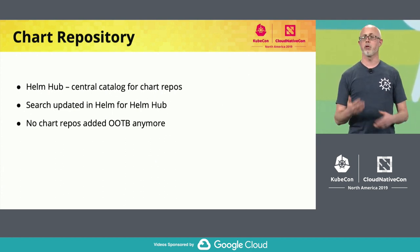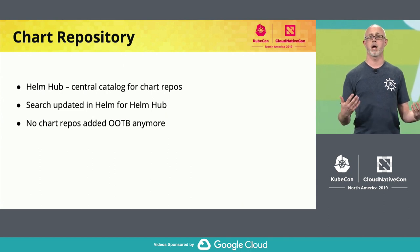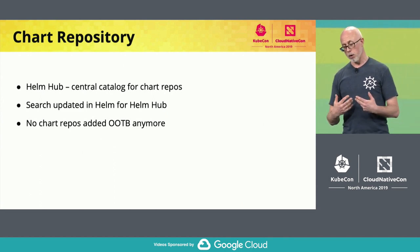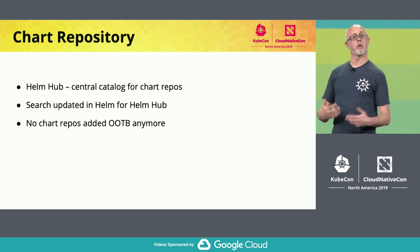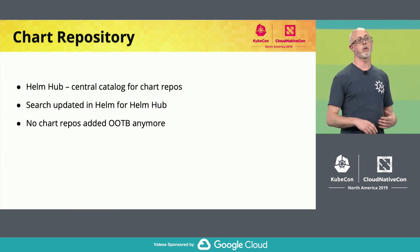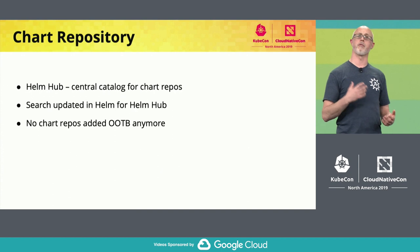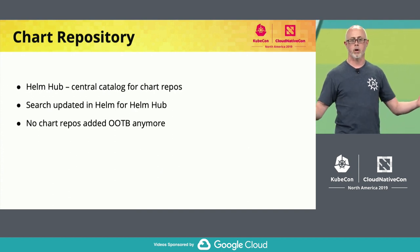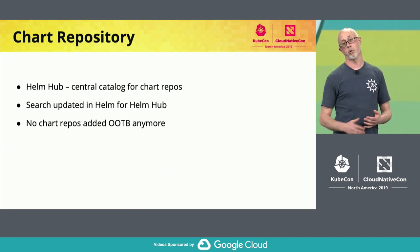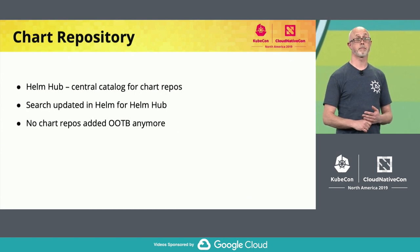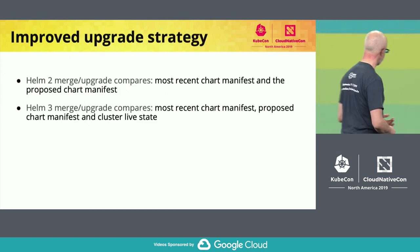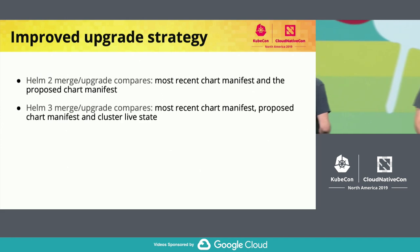Also, out of the box when you take Helm 3, you will not have any repos added — for example, stable or incubator — because different repos are out there and we're relying on you to add the repos that you need as you go along. That brings us to the improved upgrade strategy.